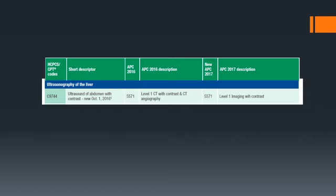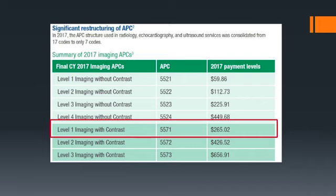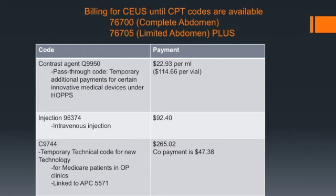C9744 payment is linked under APC 5571 to a level 1 CPT imaging code with contrast. In 2017, the APC structure used in radiology, echocardiography, and ultrasound was consolidated. The payment for level 1 imaging with contrast under which C9744 falls is designated as $265.02 under the 2017 imaging restructuring. The temporary codes only apply to the technical fee. CPT 76700 for complete abdomen ultrasound and 76705 for limited abdomen are used to bill for the professional component. There is currently no additional reimbursement for the professional component of contrast-enhanced ultrasound until CPT codes are available.